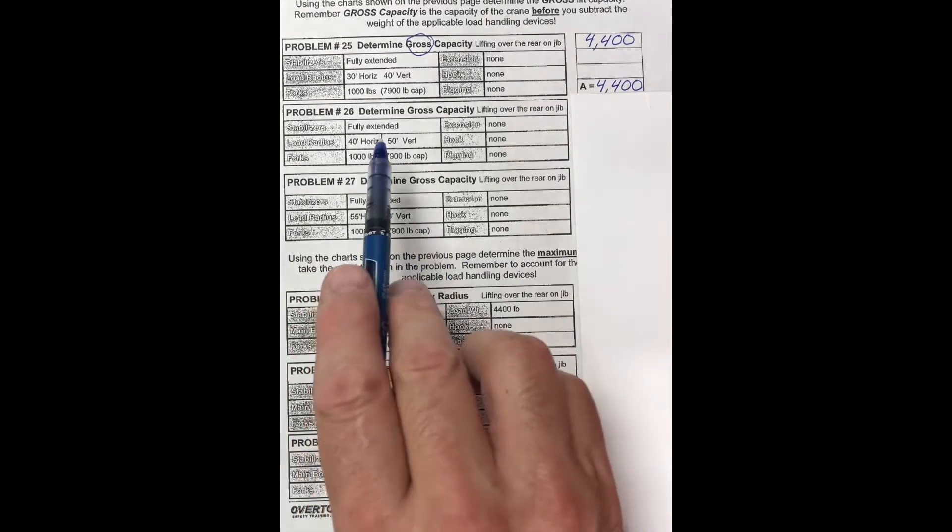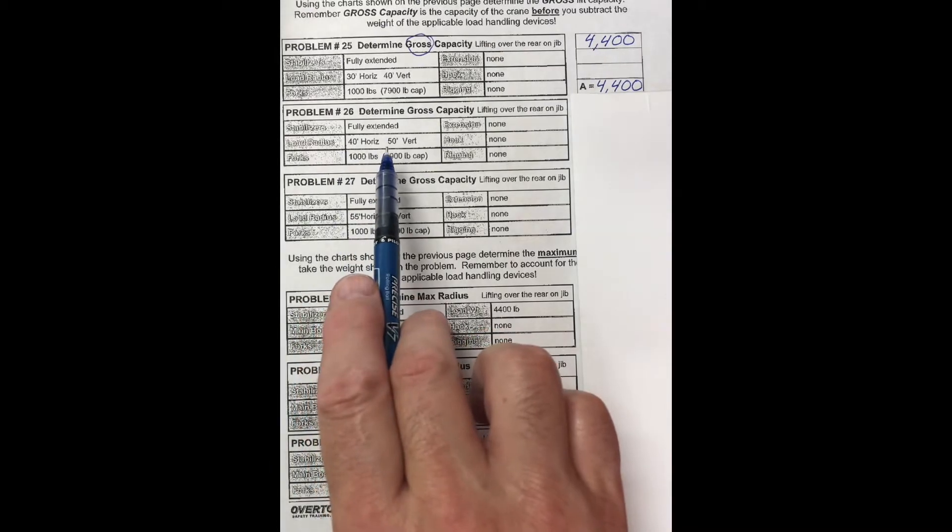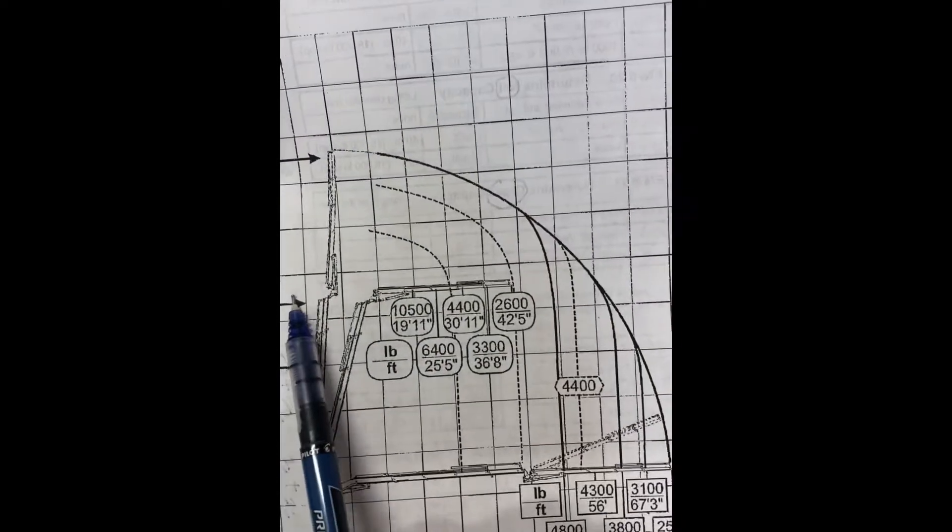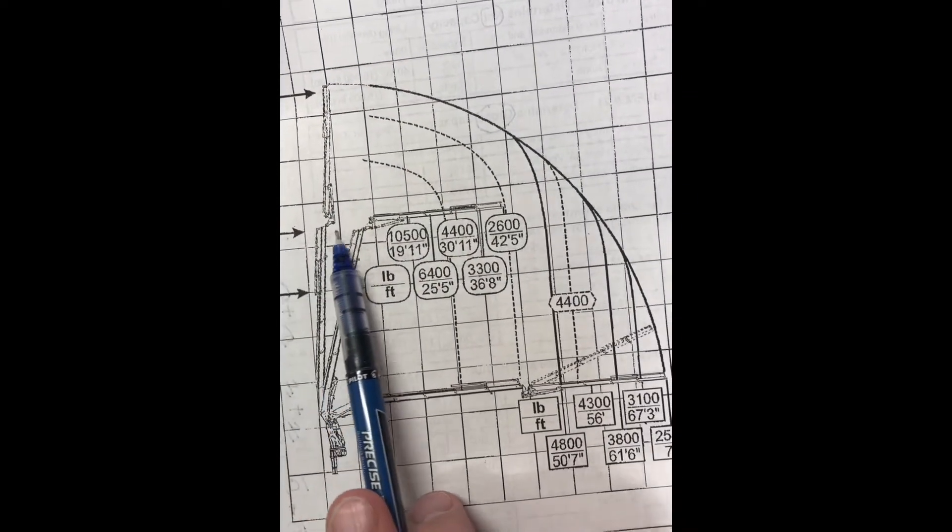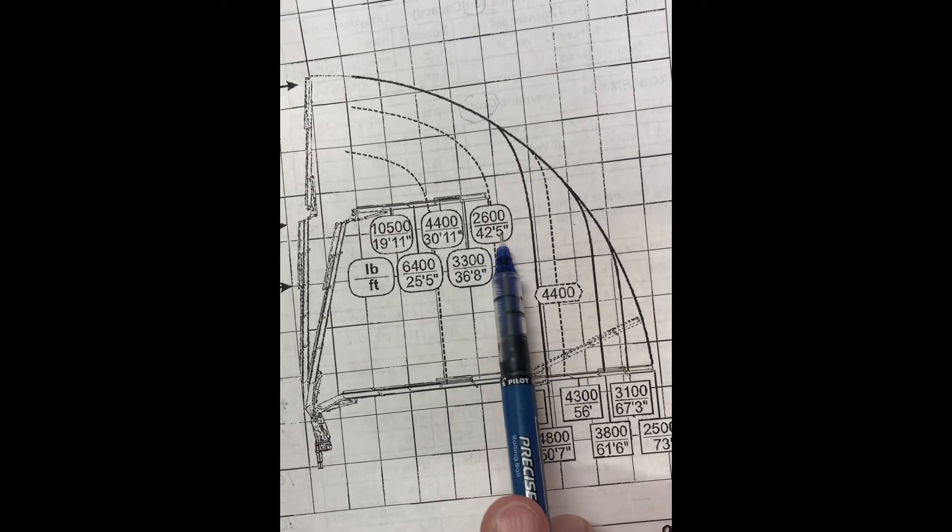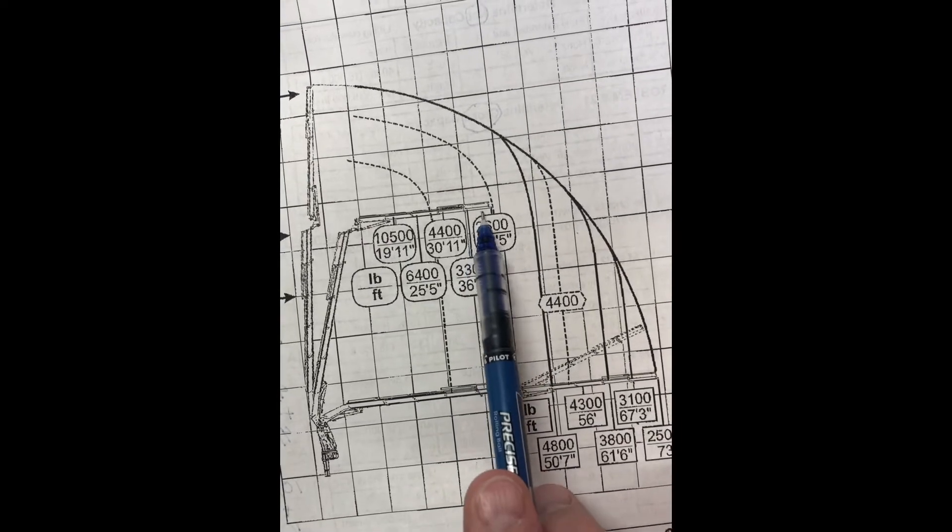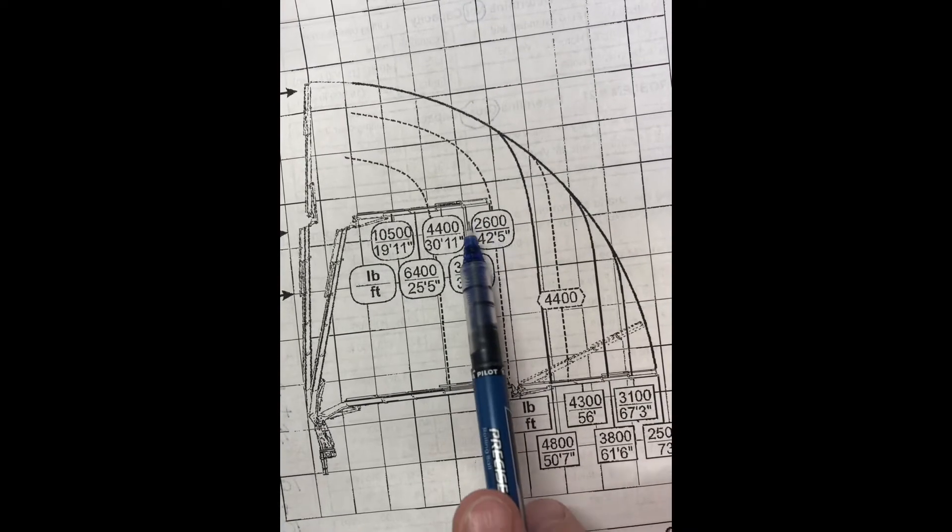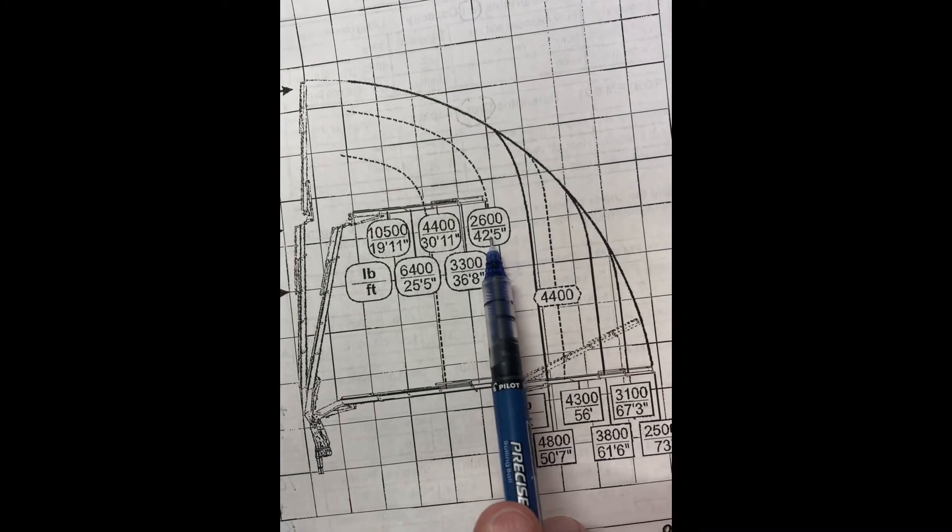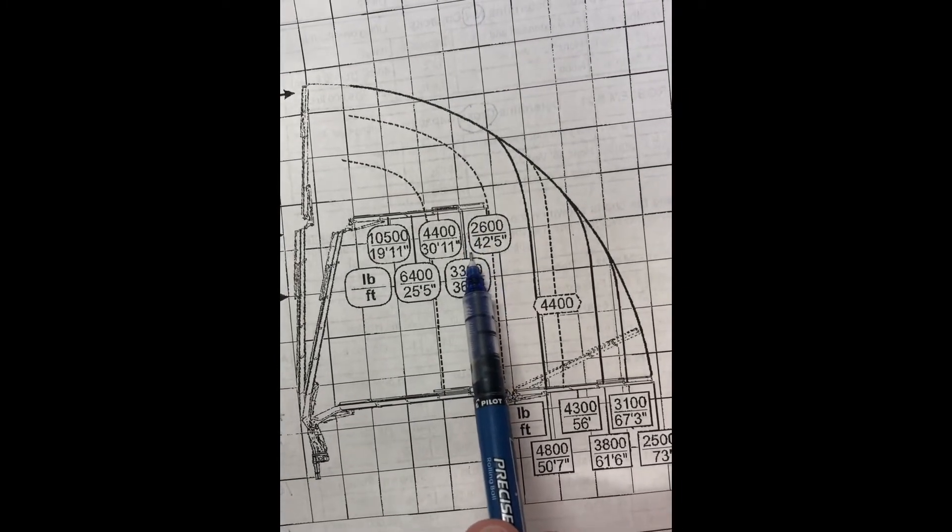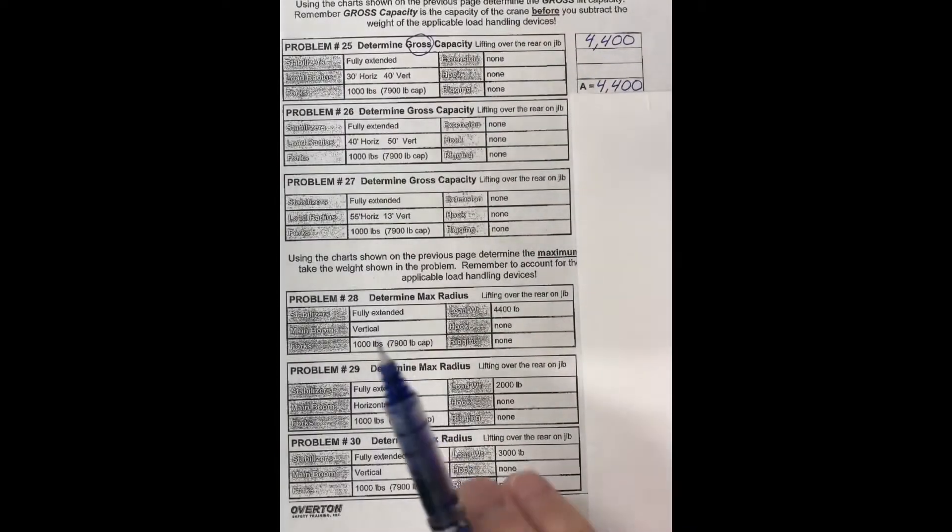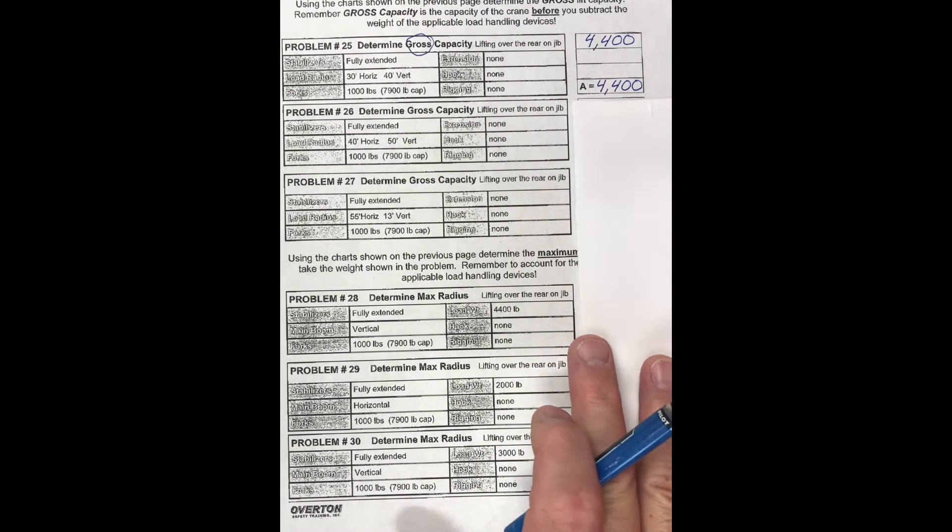The next one is 50 feet vertical, 40 feet horizontal. Here's 50 feet vertical, 40 feet horizontal. It's in between this 36,800 and 42,500. So it's in this zone. That would be 2,600 pounds for gross capacity.